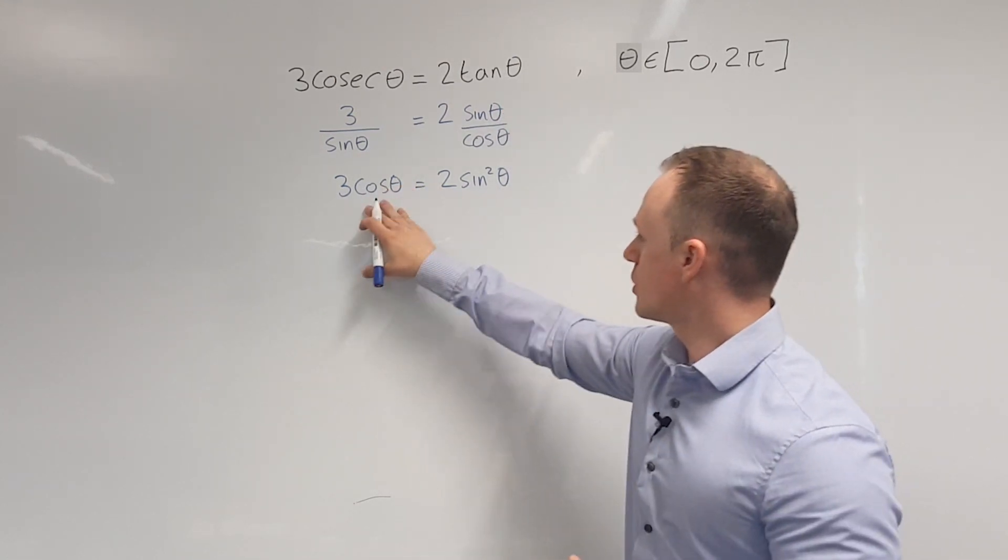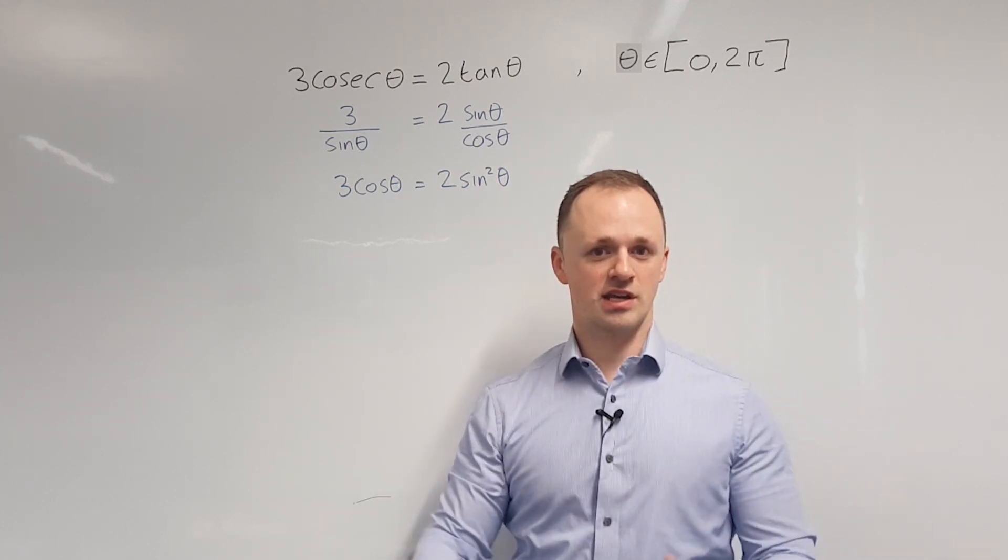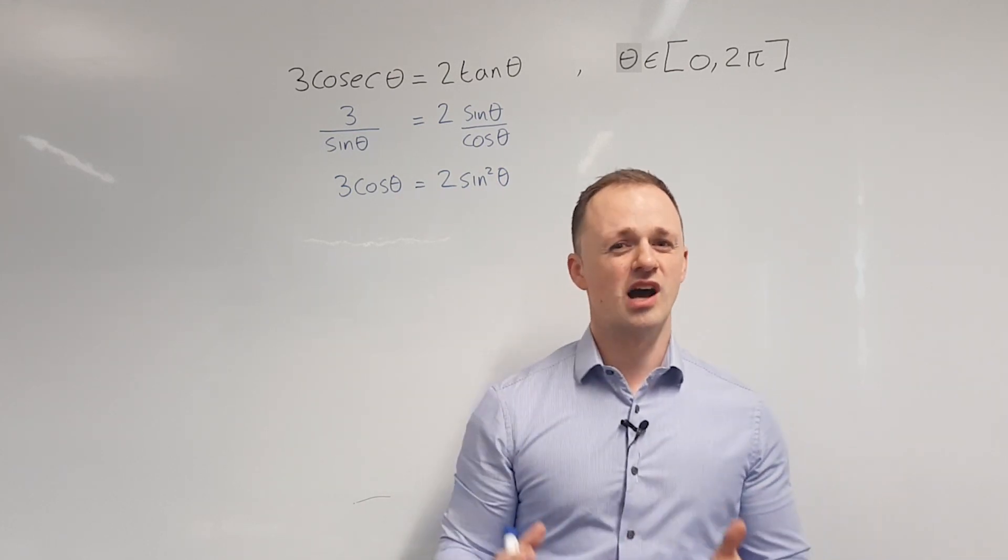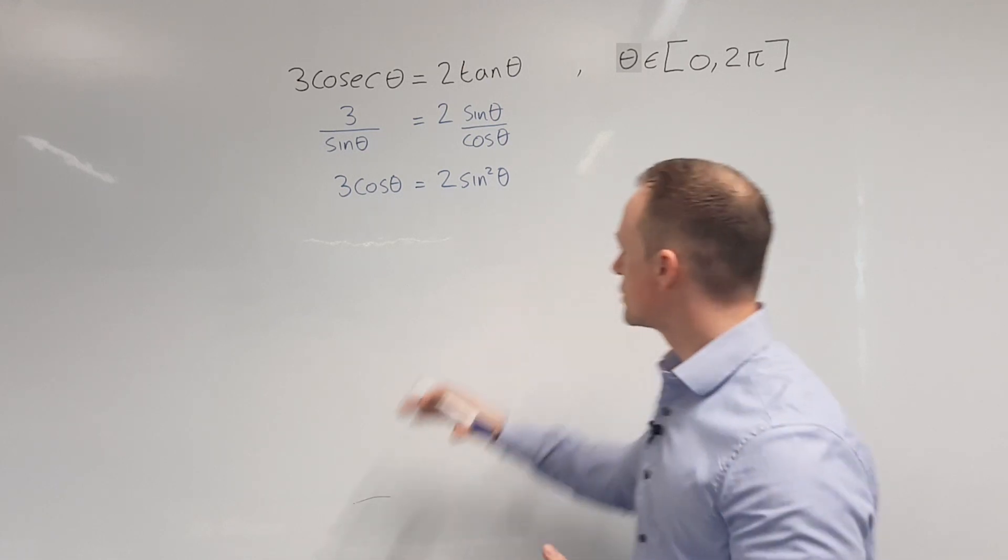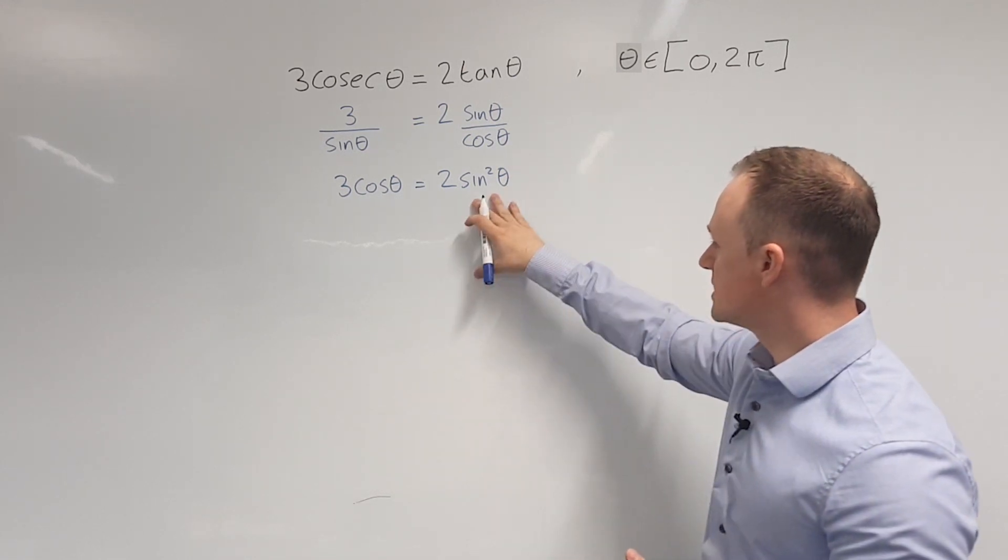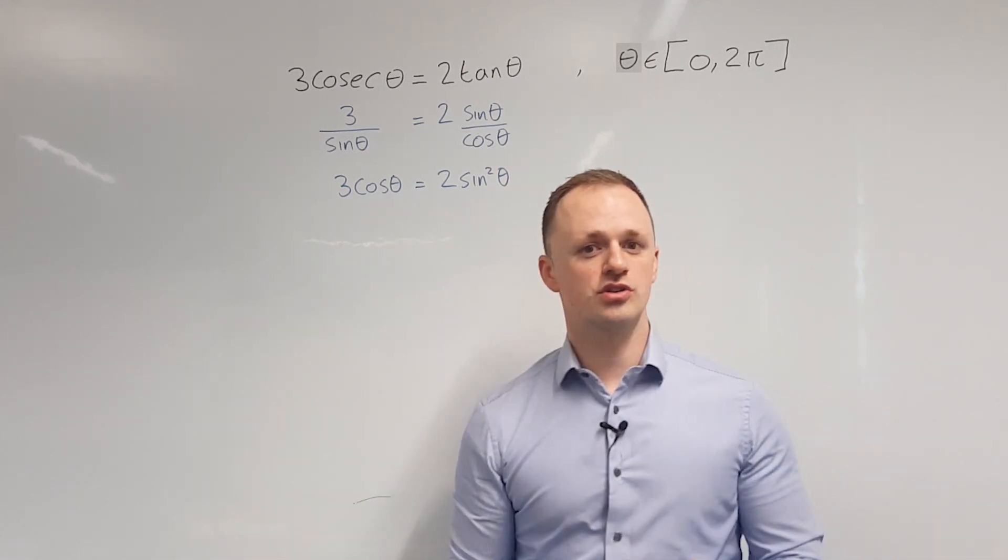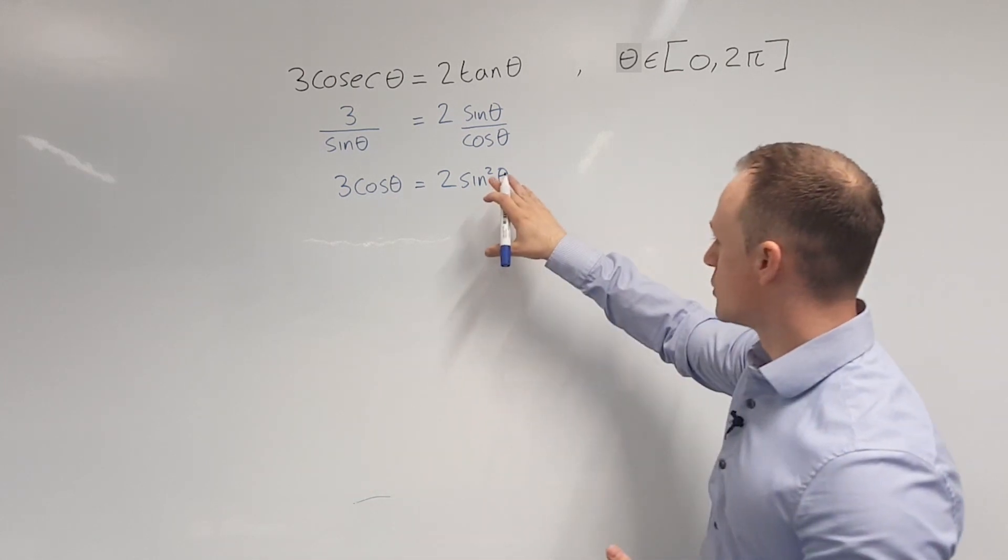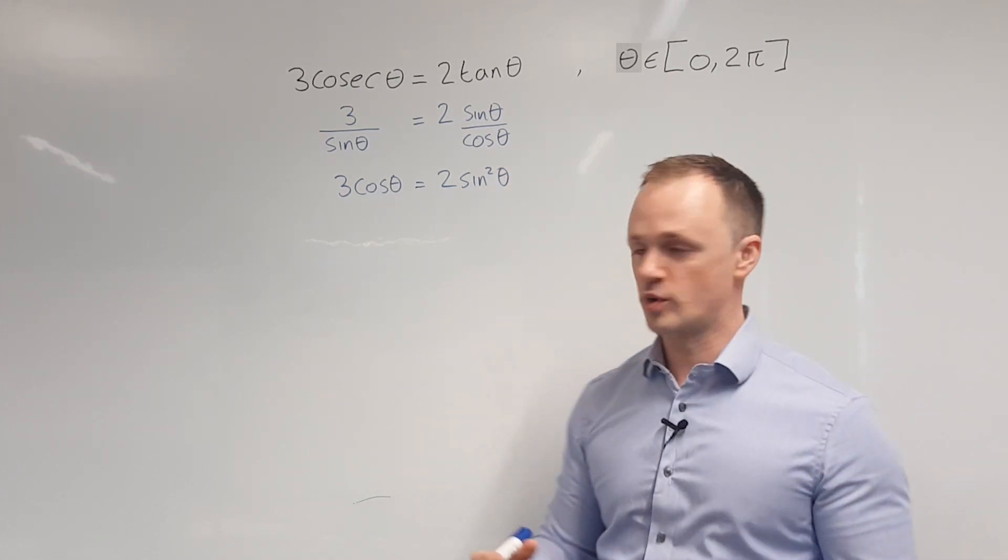From here, I've got cos theta and sine squared theta. I need to get this equation in terms of either sine or cos. In order to get rid of one of these, I can use the identity sine squared plus cos squared equals 1, and that allows me to write sine squared in terms of cos squared.